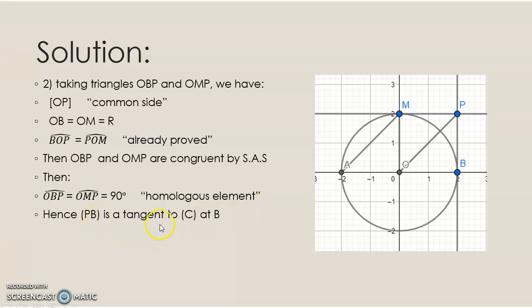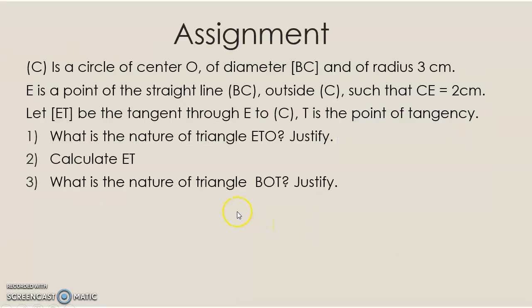Then PB is a tangent to circle C at B. Your assignment: C is a circle of center O, diameter BC, and radius 3 cm. E is a point on the straight line BC outside C, such that CE equals 2 cm.